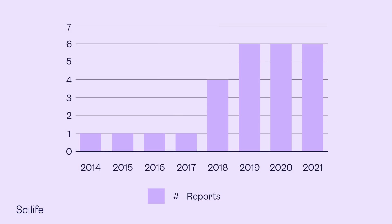The number of GDP non-compliance reports has increased in recent years. From 2019 to 2021, the European Medicines Agency published a total of 16 non-conformity reports. The majority of incidents involve the responsible person, premises and storage areas.